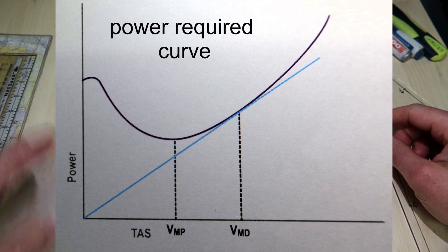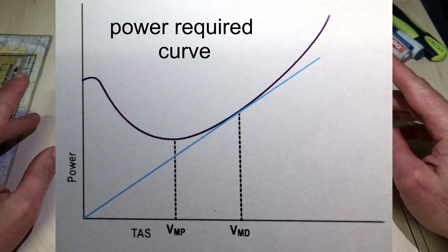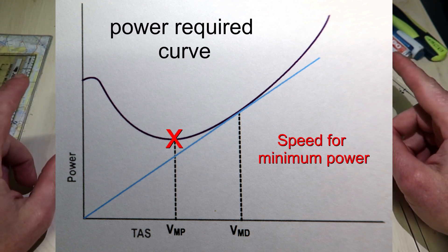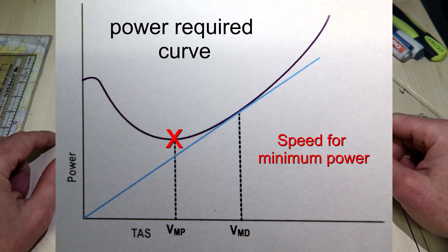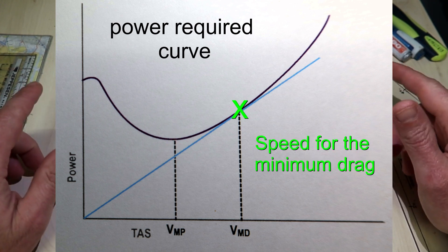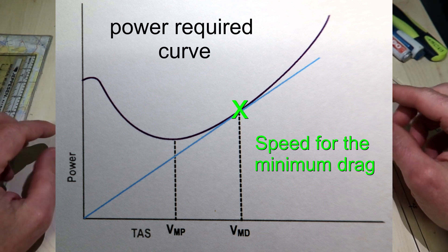Two significant points are shown on this curve. The lowest point is VMP, the speed for minimum power, and the tangent to the curve, which is the speed for minimum drag, VMD.